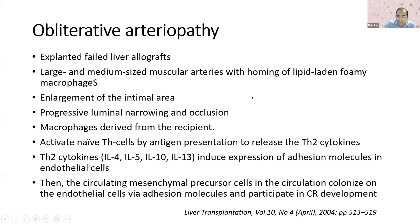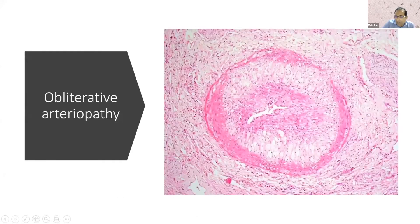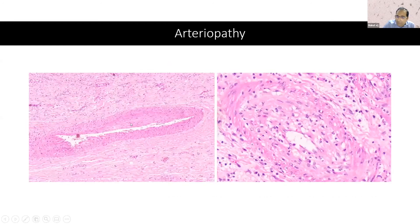Coming to obliterative arteriopathy, which is an important feature in chronic rejection — usually seen in explants — it affects large and medium-sized muscular arteries. This is a typical artery with a lot of foam cells, the lumen completely obliterated, and you can see a collection of foam cells along with some lymphocytes. You can also see, at the late stage, intimal fibrosis in the arteries at the hilum — eccentric fibrosis in some of the grafts.